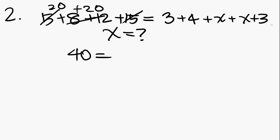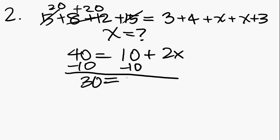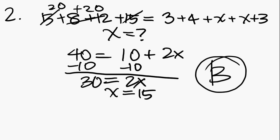3, 4, and 3. Two threes is 6 plus 4, that's 10 plus two x's together, that's 2x. Subtract 10 from both sides and you get 30 on the left and 2x on the right. Divide both sides by 2 and you get x equals 15. And 15 is answer B. Boom! Another question solved. Moving on, making good time here.